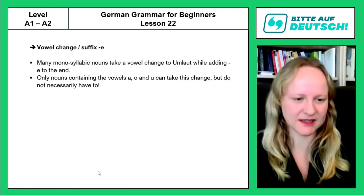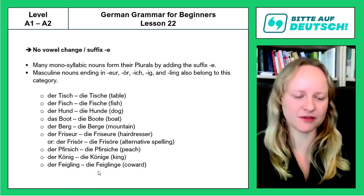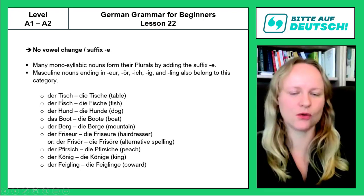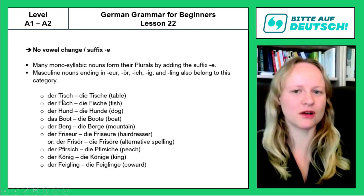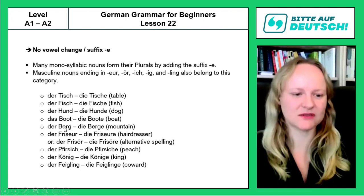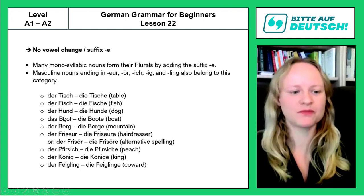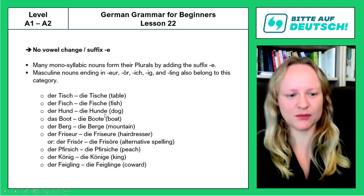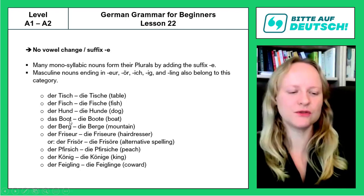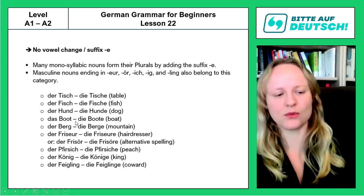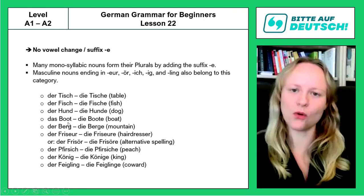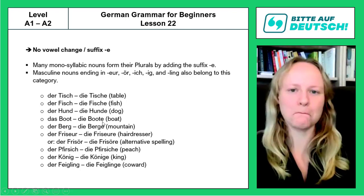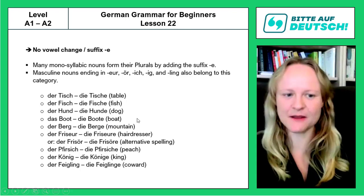But returning to the previous list, the vowel change doesn't necessarily have to occur. For example, there is no umlaut equivalent for I or E, so we cannot take a vowel change there. And although U does have an umlaut equivalent, we still don't say Hünde — we say Hunde. Also, we do not say Böte — we say Boote, even though O also has an umlaut equivalent. So A, O, or U may change to umlaut, but they don't necessarily have to. I think this category was rather easy to learn.